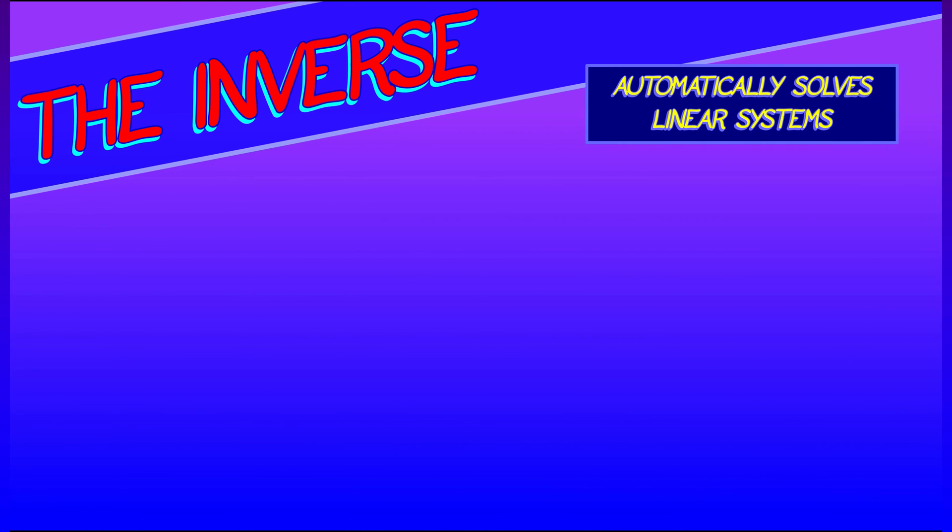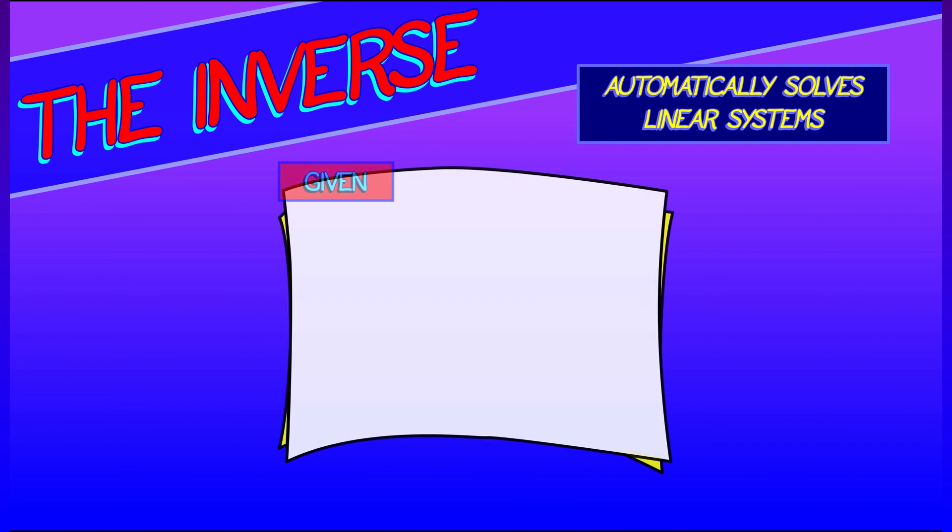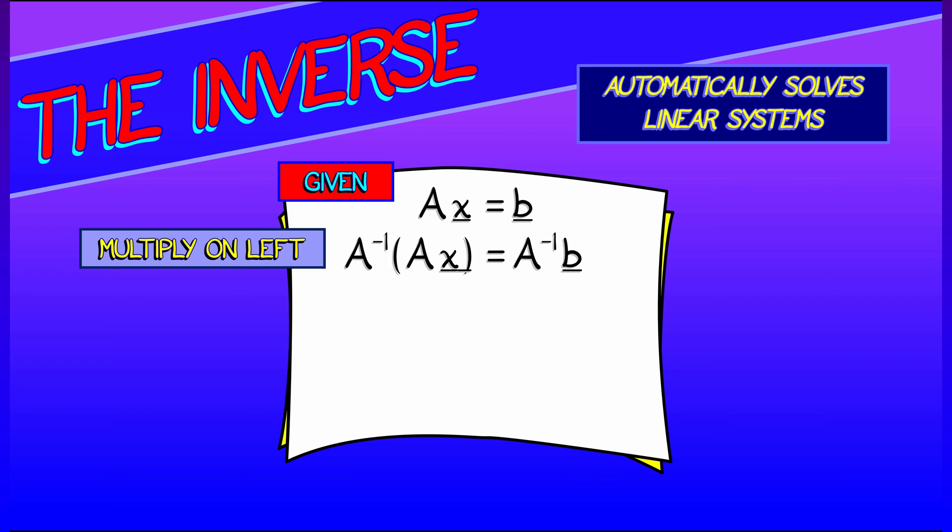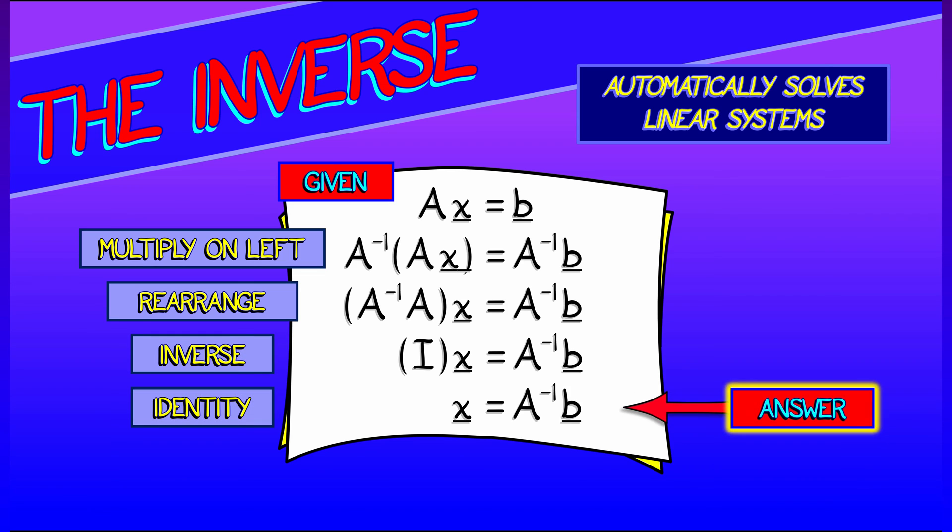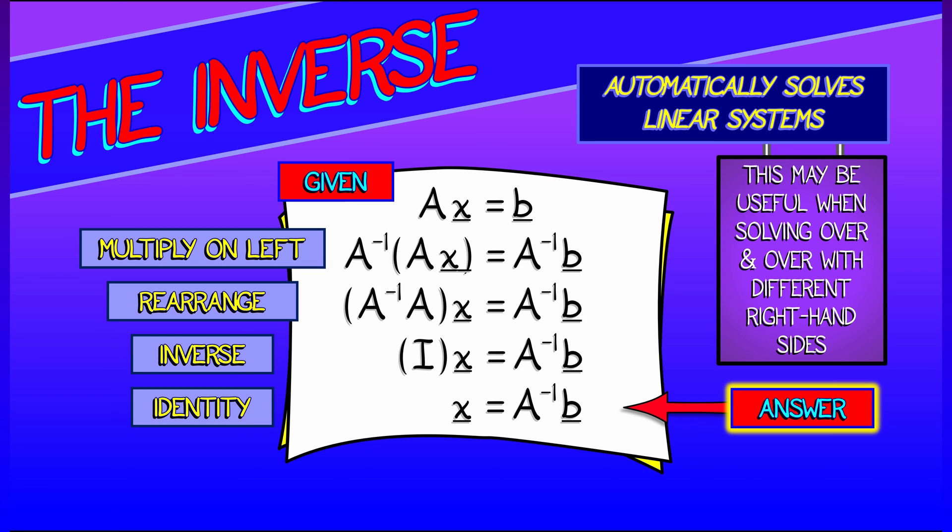What inverses are good for, among other things, is solving linear systems. Let's go back to our ridiculous matrix division idea and replace it with inverses. Given Ax=b, we multiply on the left by A inverse and then regroup those parentheses. Use the definition of the inverse to get A inverse times A is the identity. The identity times x is just x. We get a solution x equals A inverse times b. We're not doing matrix division. We're using inverses.